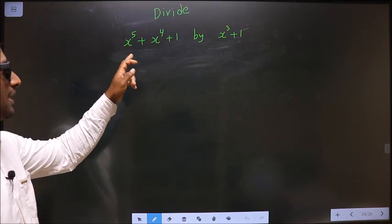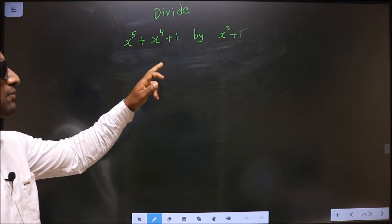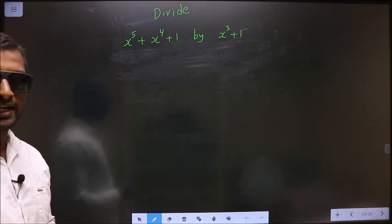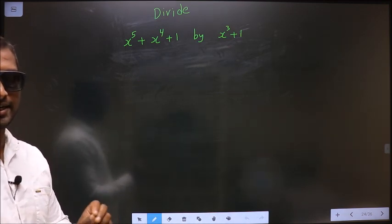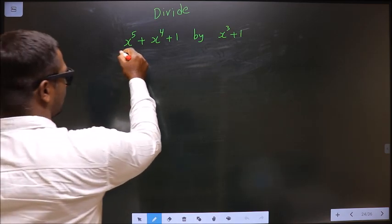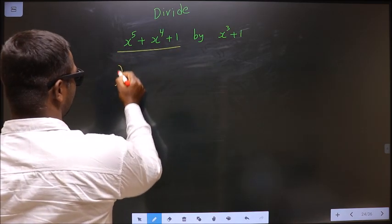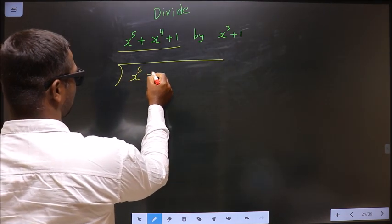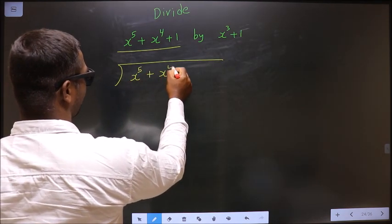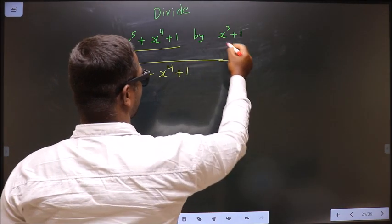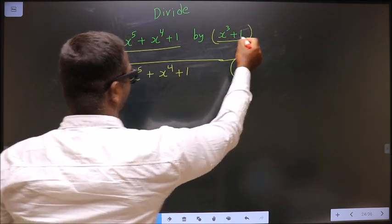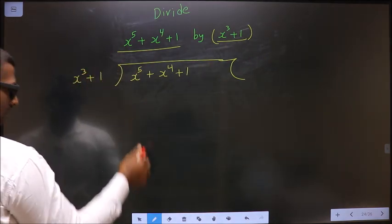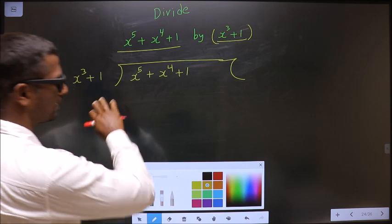Divide x power 5 plus x power 4 plus 1 by x cube plus 1. To divide polynomials, first we write it in this way. This is the dividend we write here: x power 5 plus x power 4 plus 1. This is the divisor we should write here. This is step 1.